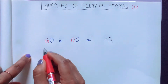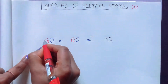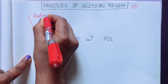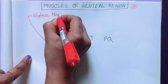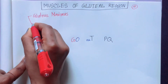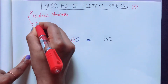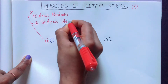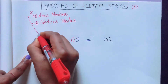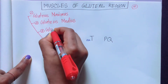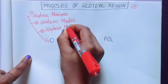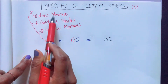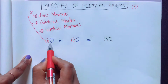The first G is for gluteus muscles. We have three gluteus muscles: number one, gluteus maximus; number two, gluteus medius; number three, gluteus minimus. So G is for the three gluteus muscles.